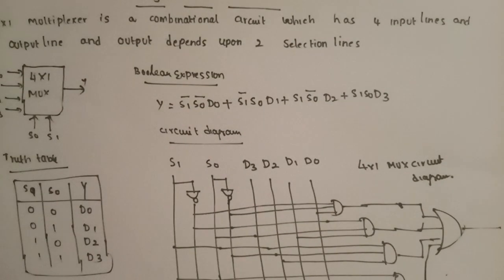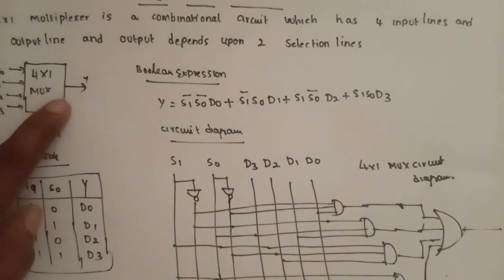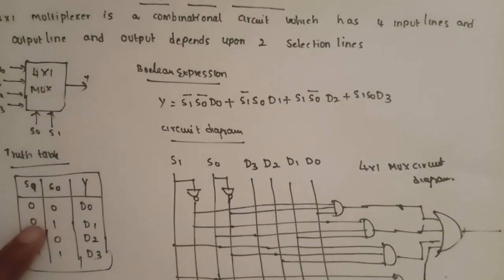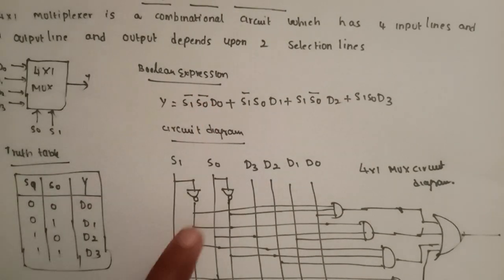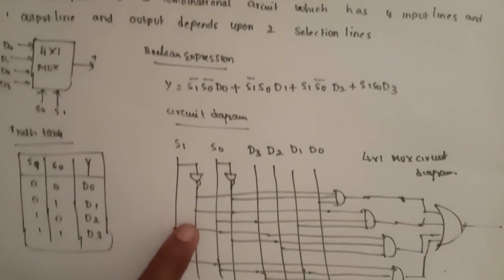This completes the circuit diagram. We have covered the block diagram, truth table, Boolean expression, and circuit diagram for the 4x1 multiplexer.